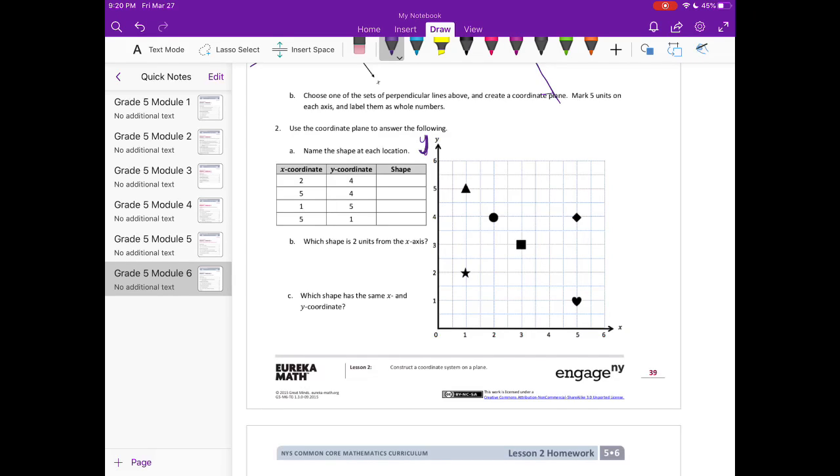So x coordinate 2 would be right here, and y coordinate 4 we're going to go up one, two, three. Oh sorry, that's probably a mistake that a lot of you would make. So notice that each one is two squares. So one, two, three, four. That is the circle.